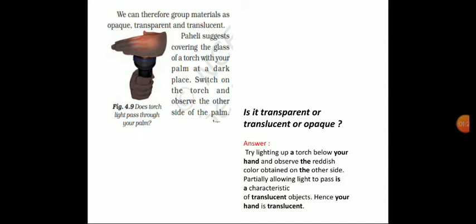You can see some reddish coloured light on your hand. But we cannot see the blood — there is a colour formation. We can see a red coloured light. So we can therefore group materials as opaque, transparent, and translucent.